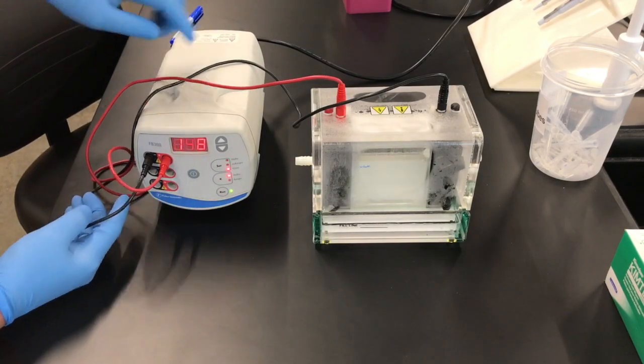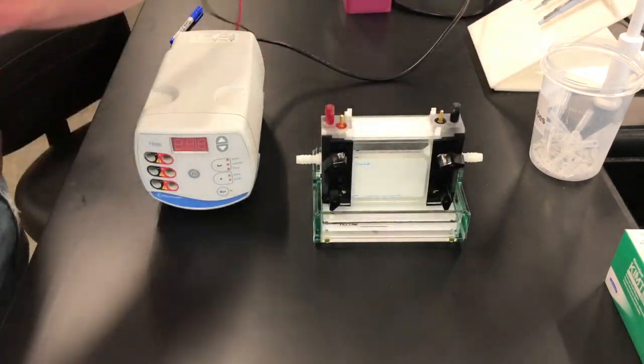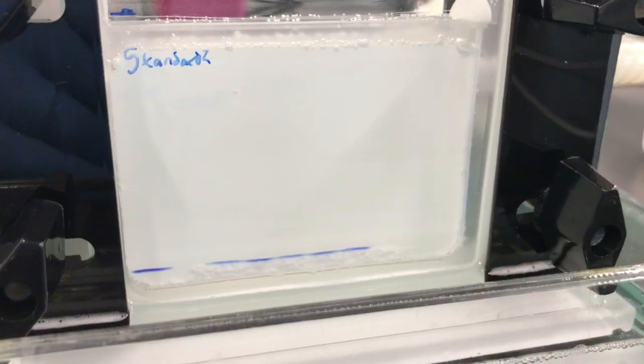Once it's done, go ahead and turn off the power supply, unplug all the cables, and remove the top cover. The sample should have run so that the dye is about one centimeter from the bottom of the gel.